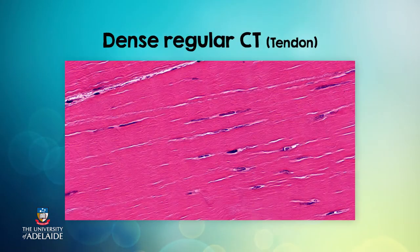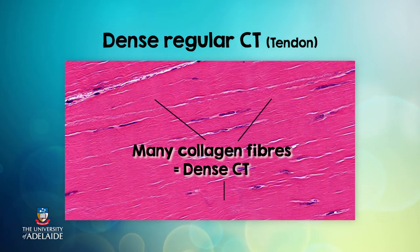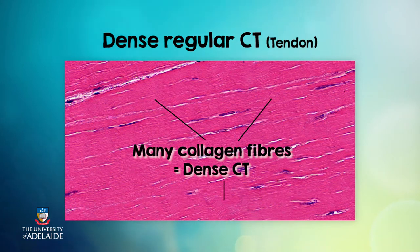Take a look at this histological slide of a tendon. You can see how the extracellular matrix here is made up of many collagen fibres that make that space very dense.